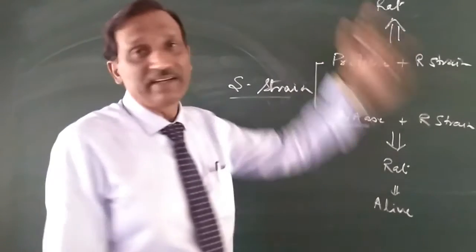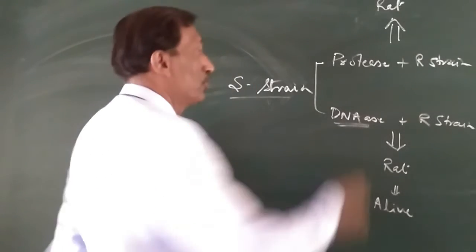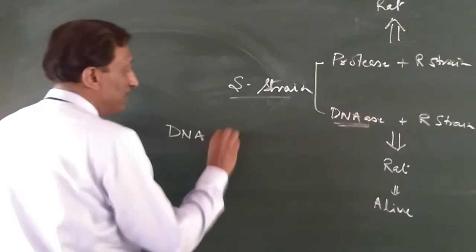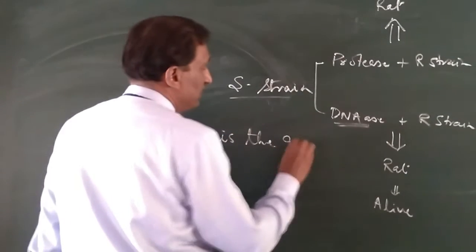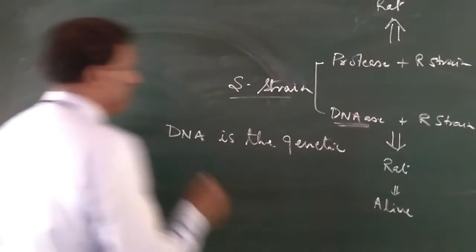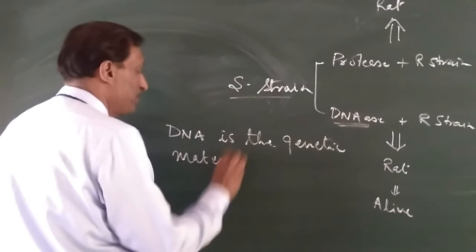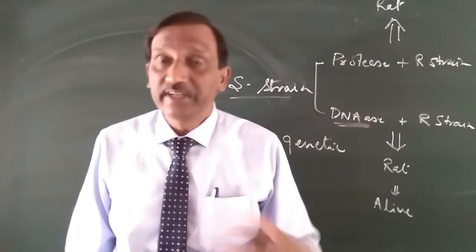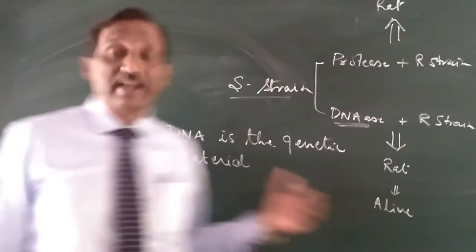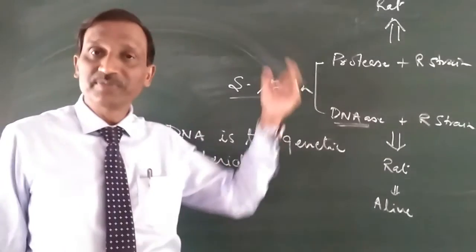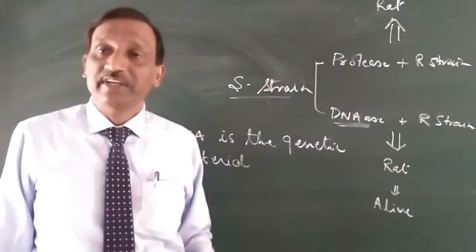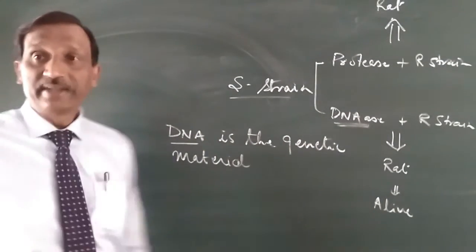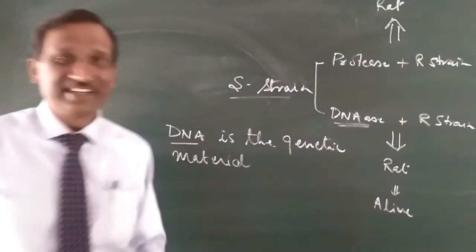It is only the DNA. When the R-strain cultured with digested protein were injected into the rat, the rat dies. This is how they came to know that DNA is the genetic material. The changing of rough state into smooth state is actually a genetic feature, and since this genetic character is changed by addition of DNA from the smooth strain into the R-strain, it should be the DNA which is responsible.